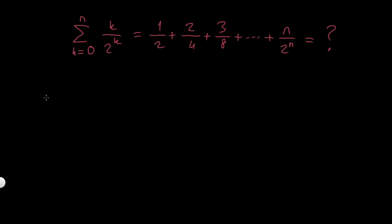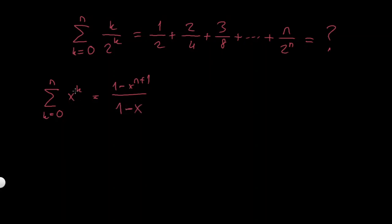One way would be to consider the geometric sequence x to the k, where k goes from 0 to n. This equals 1 minus x to the n+1 over 1 minus x. Since this is a finite sum, it's true for any x — normally we'd require the absolute value of x to be less than 1. So we can differentiate both sides.